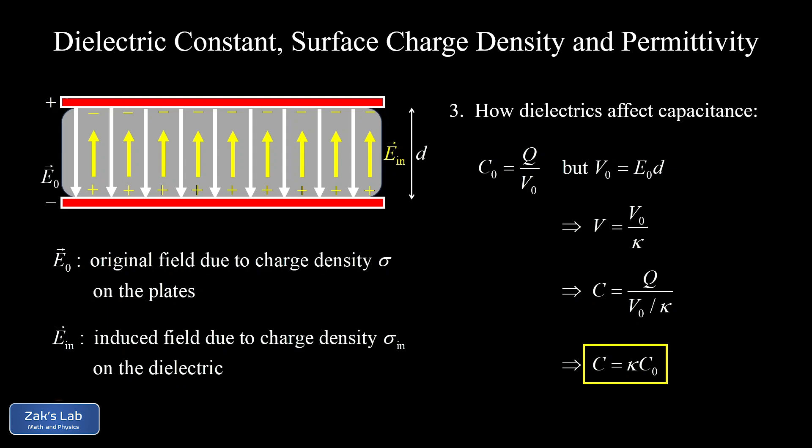Just one more note on capacitance: the way we compute capacitance based on the geometry of a parallel plate capacitor is epsilon_0 times A over d. Now if we have a dielectric between the plates, that gets multiplied by a factor of kappa, giving us a formula for capacitance of kappa times epsilon_0 times A over d.